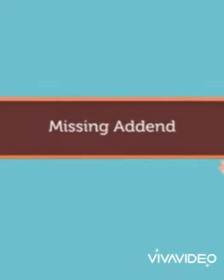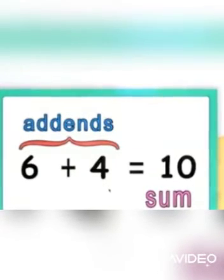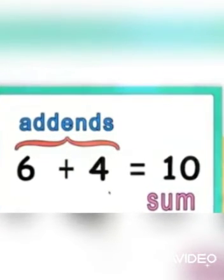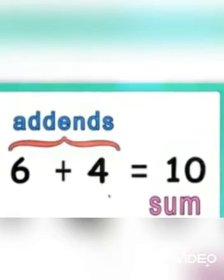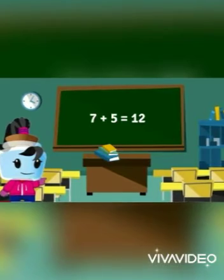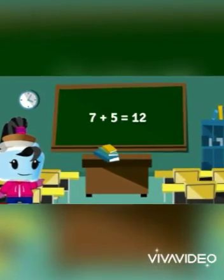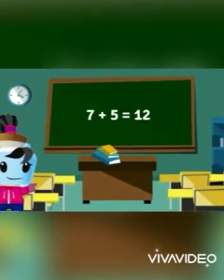Now on book page 32, our topic is missing addends. You know, students, what are addends? The two numbers which participate in addition are called addends. For example, six plus four — six and four are addends, and ten is the sum. In another example, seven plus five are addends and 12 is our sum.